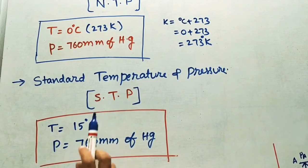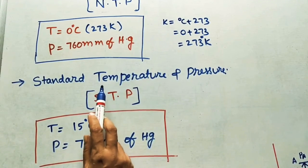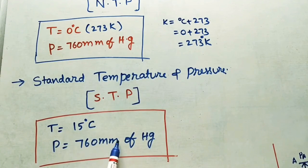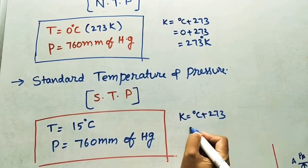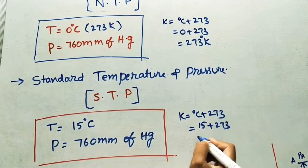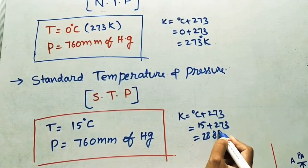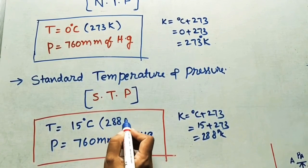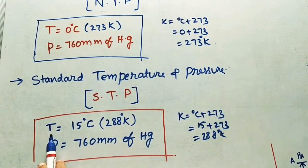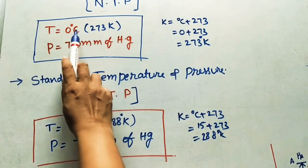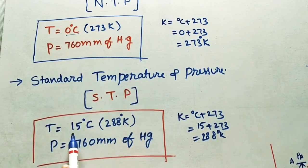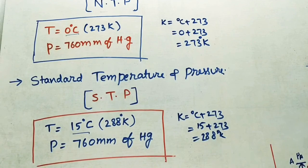Sometimes STP (Standard Temperature and Pressure) conditions are given instead of NTP. STP temperature is 15°C and pressure is the same — 760 mm of Hg. Converting: 15 + 273 = 288 K. So STP conditions are: temperature = 15°C or 288 K, pressure = 760 mmHg. In both NTP and STP the pressure value is the same; only the temperature differs — 0°C for NTP and 15°C for STP.